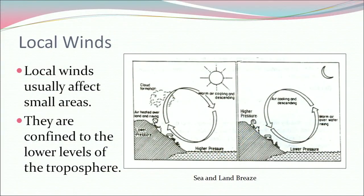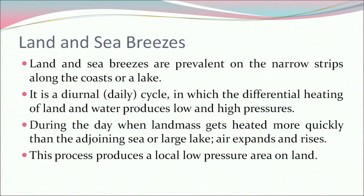What are local winds? Local winds usually affect small areas and are confined to the lower levels of the troposphere. Land and sea breezes are prevalent on the narrow strips along the coast or a lake. It is a diurnal (daily) cycle in which the differential heating of land and water produces low and high pressures.